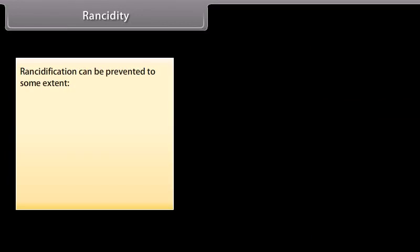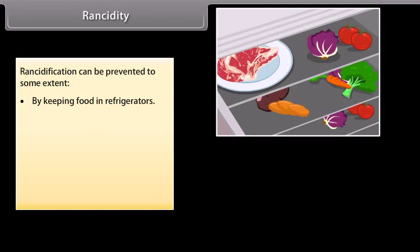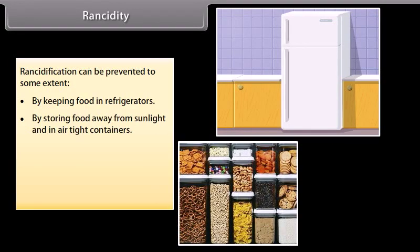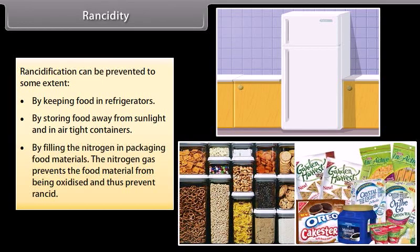Rancidification can be prevented to some extent by keeping food in refrigerators, by storing food away from sunlight and in airtight containers, by filling nitrogen in packaging food materials. The nitrogen gas prevents the food material from being oxidized and thus prevents rancidity.